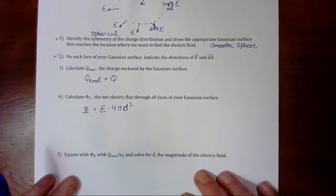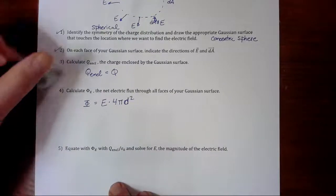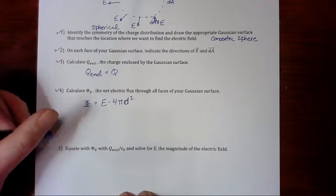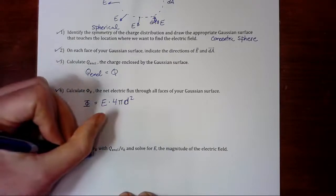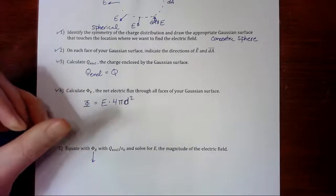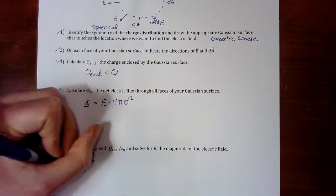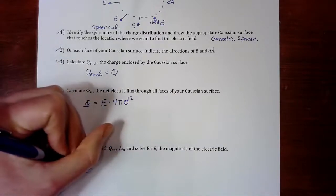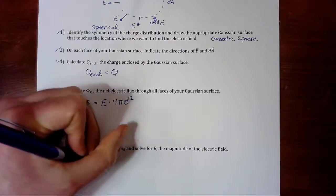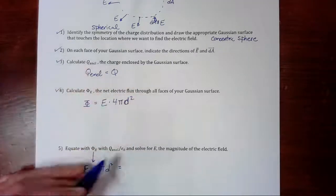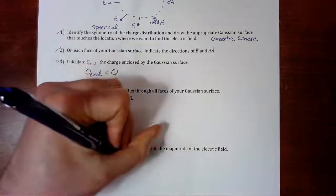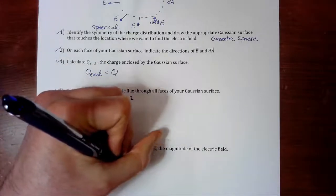Then, for the final step, we're going to equate our flux with q enclosed over epsilon naught. So, our flux, which we found just before, is E times 4π d squared. And our q enclosed is q over epsilon naught.